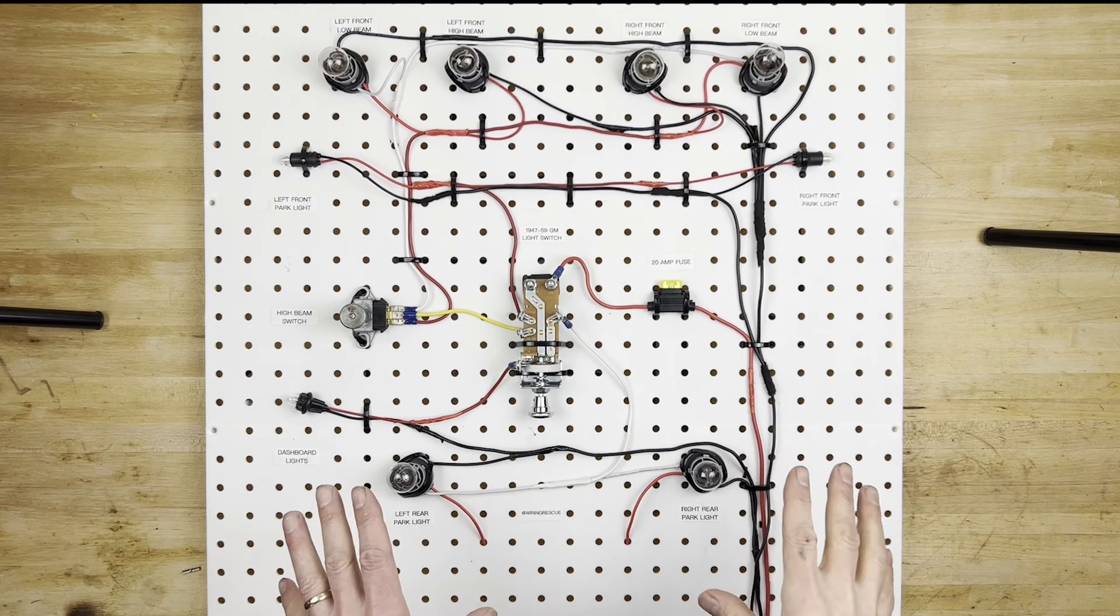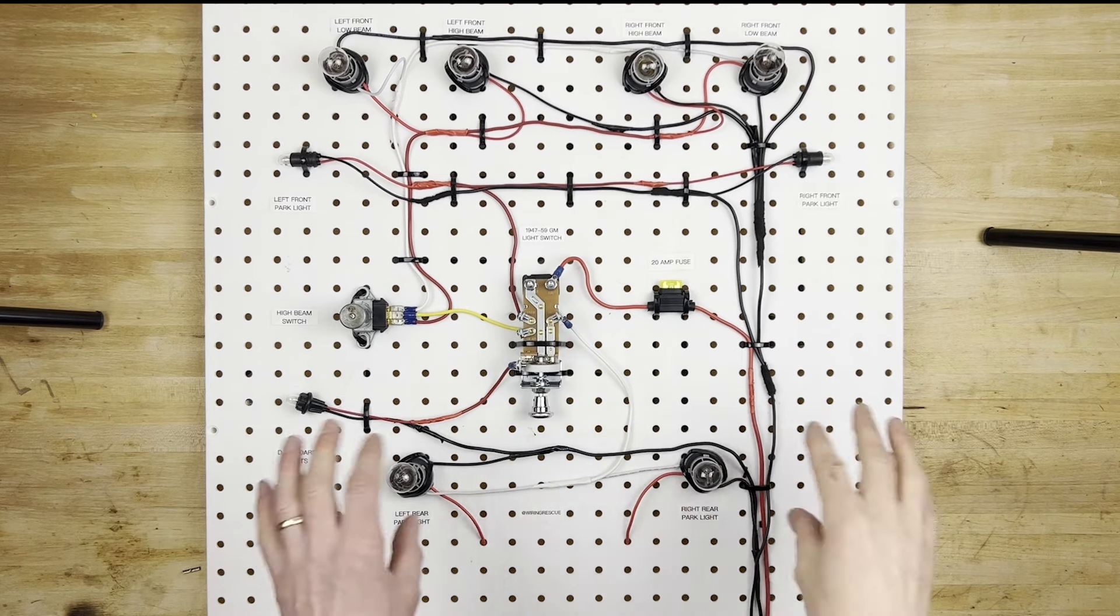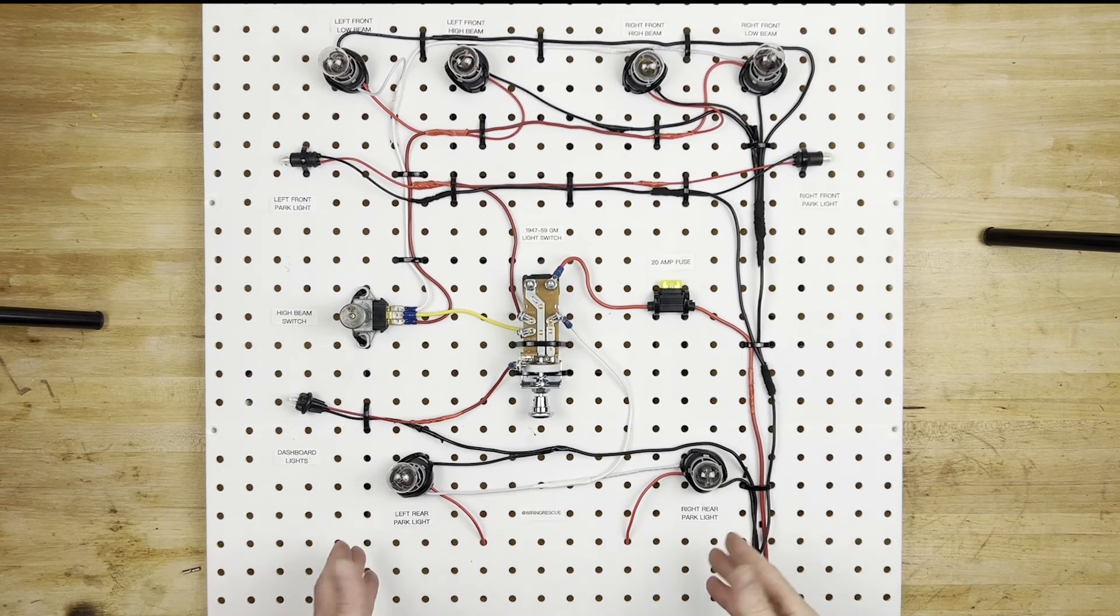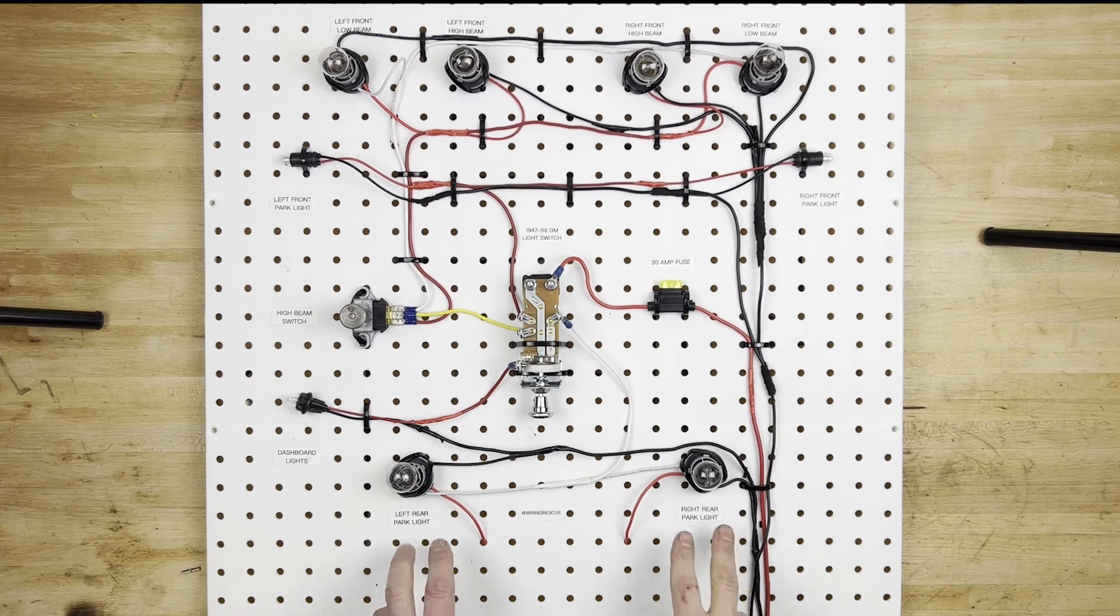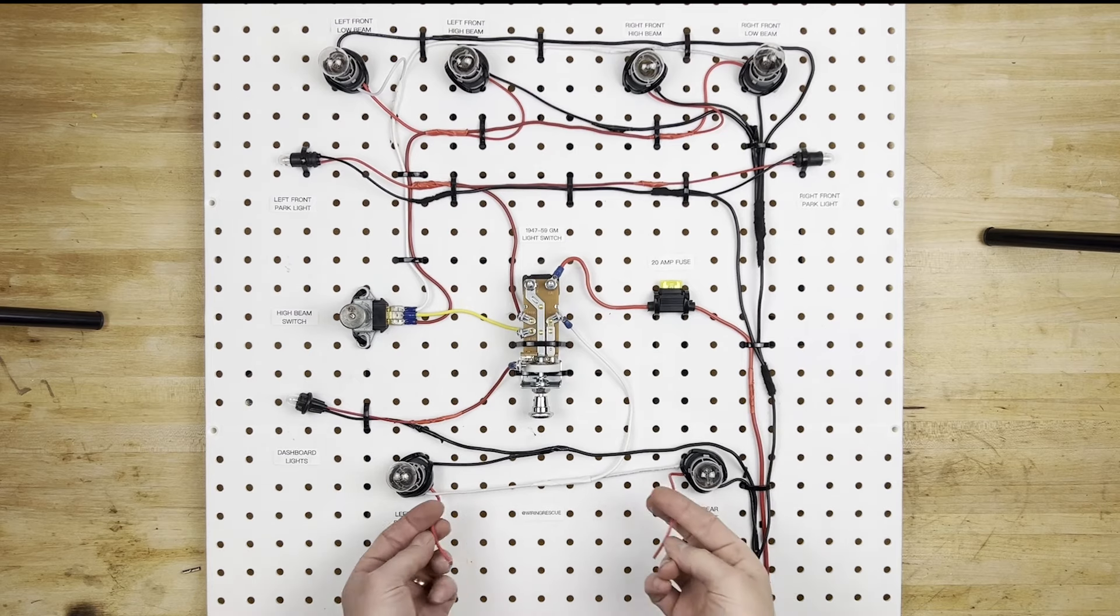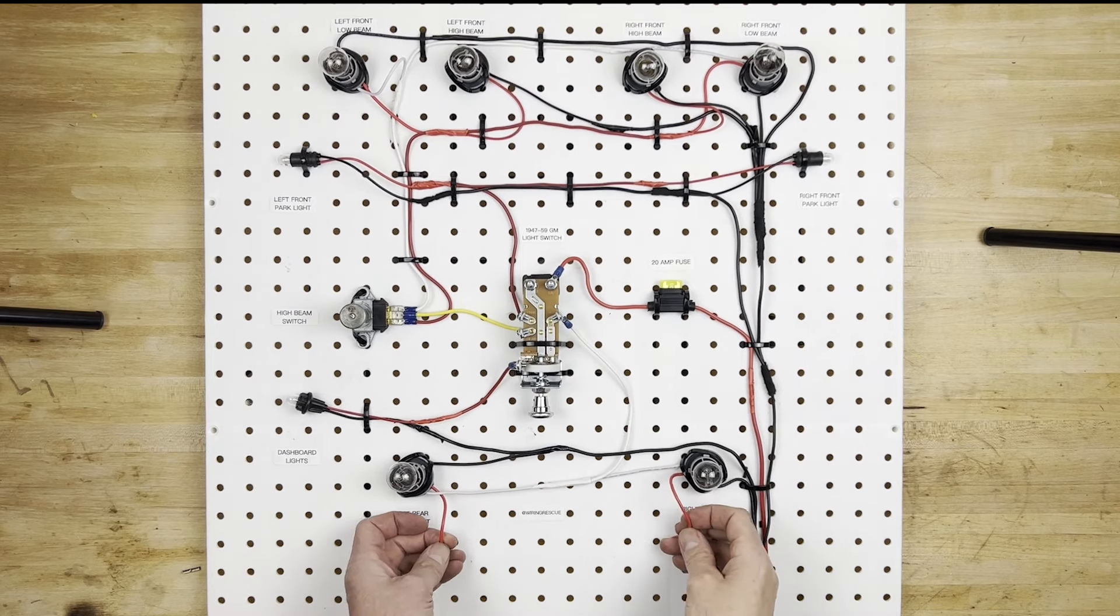Depending on what kind of vehicle this is wired into, and what style bulbs you have in the back of your vehicle, you'll either want to wire these up, or not wire them up. Maybe you're using 1156 style bulbs, which only have two wires, and therefore these won't even exist on your car at all.